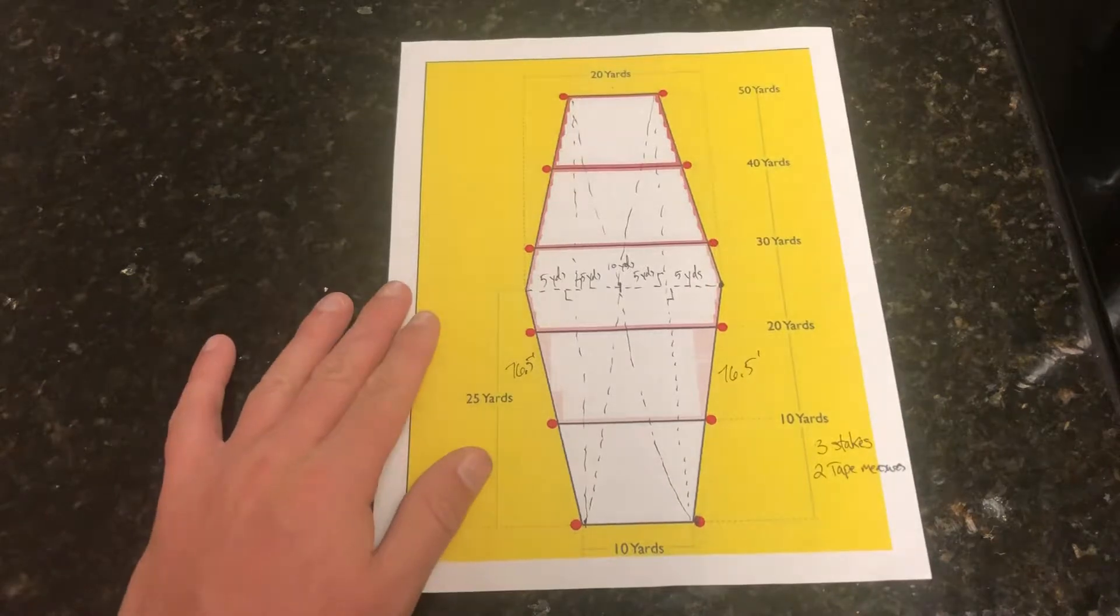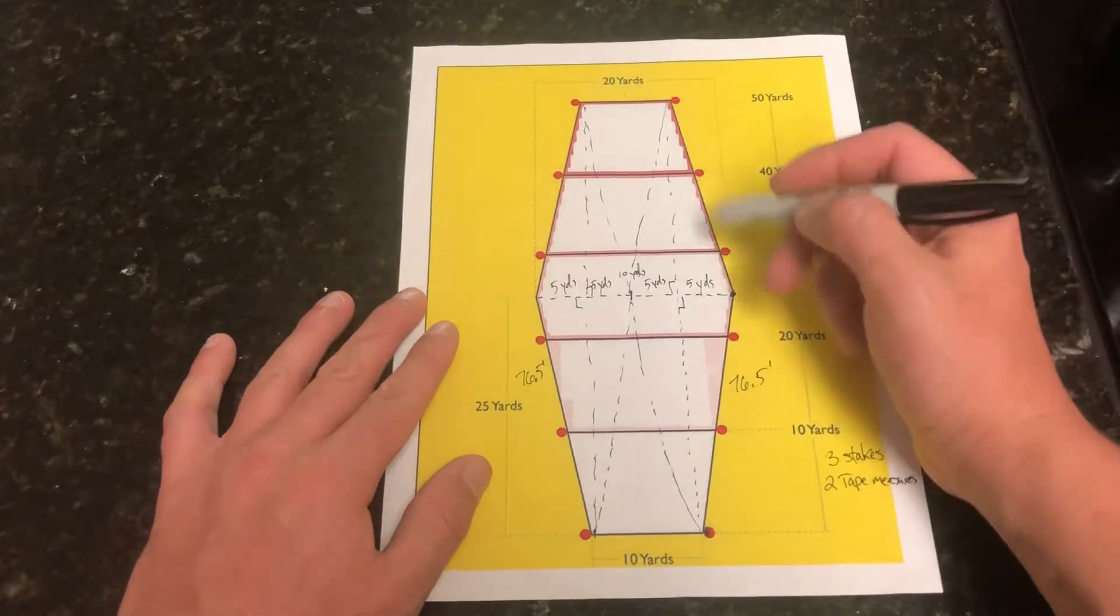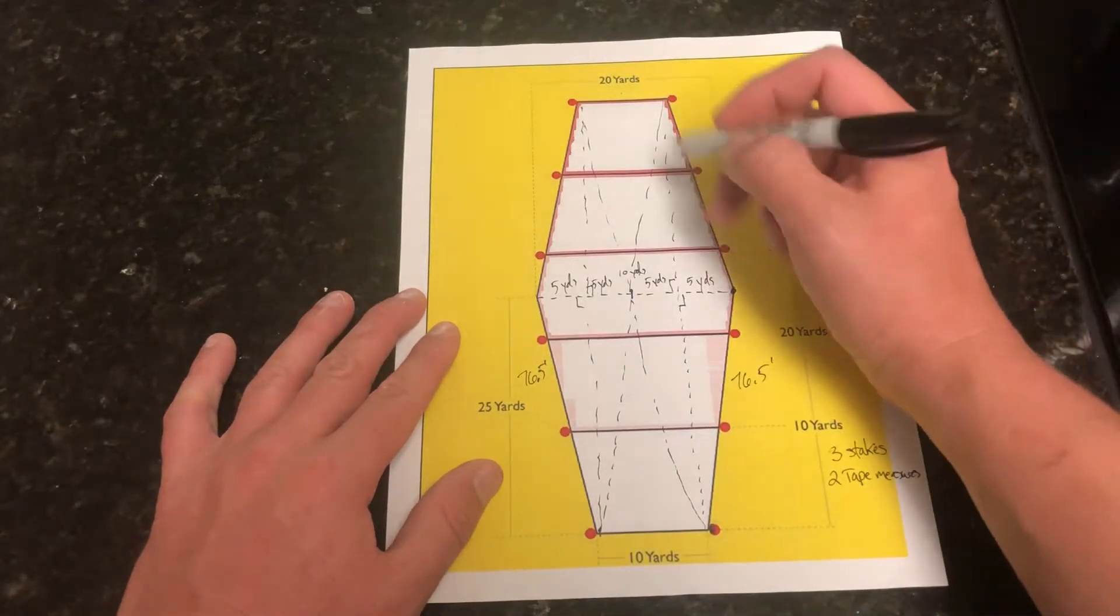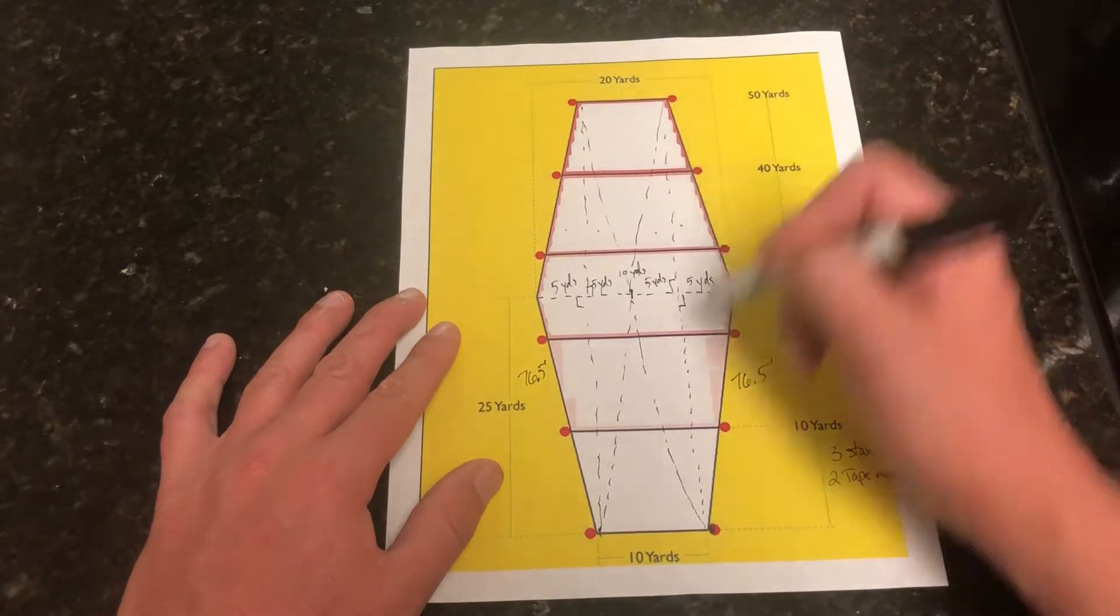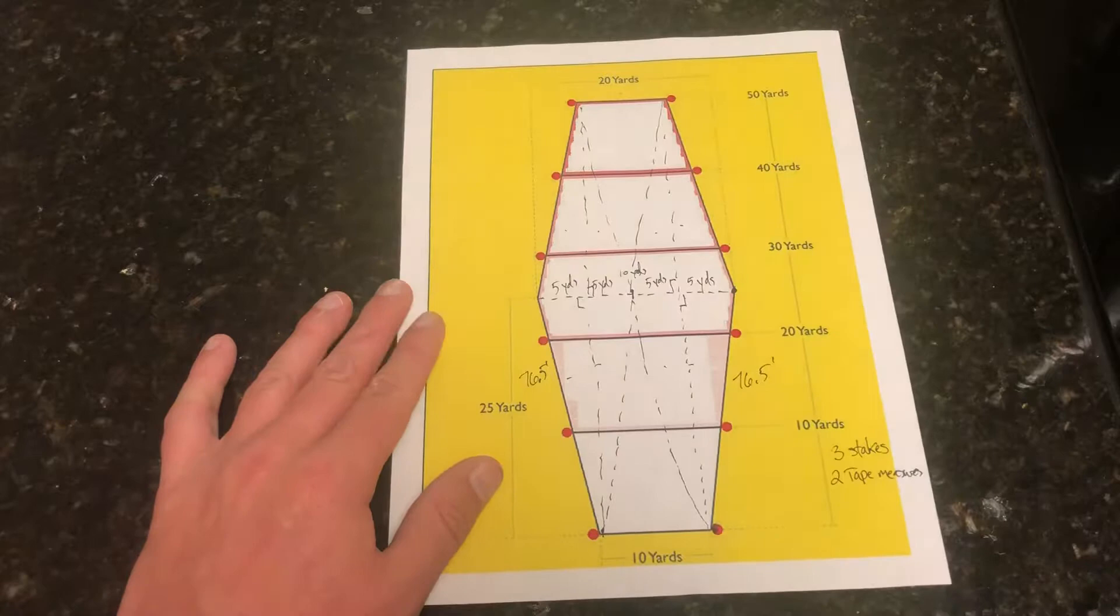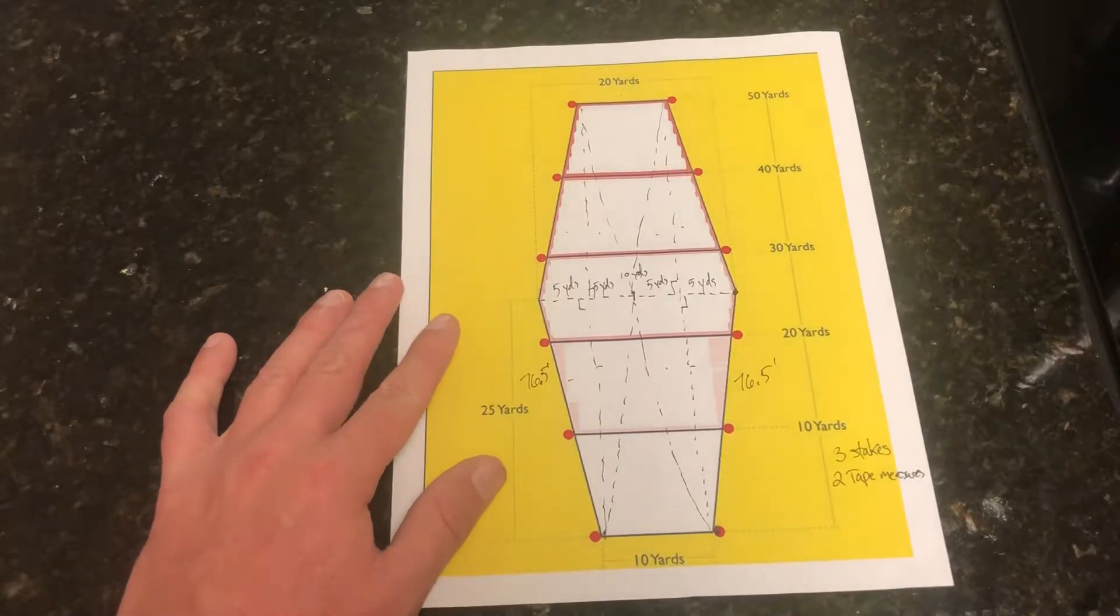I won't bore you with the math. What that basically amounts to is this line from here to here is 76 and a half feet. That's going to hold true all the way around, since we basically built identical right triangles into our field here. We've got eight of them.